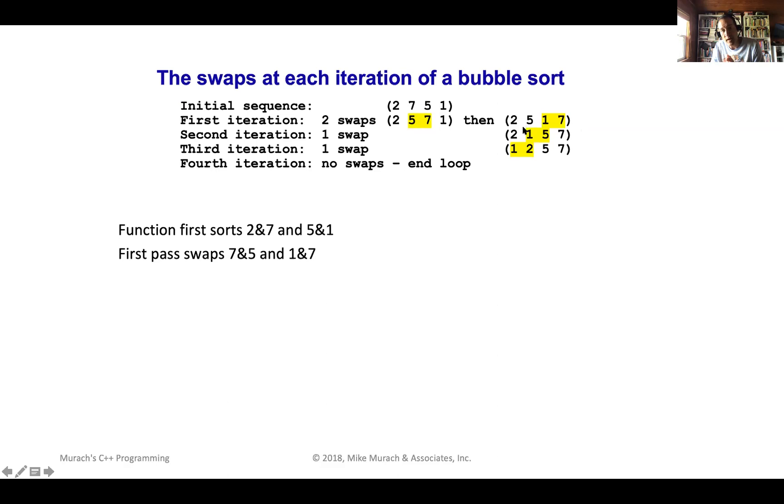Is two smaller than five? Yep. So I don't need to do anything there. Is five smaller than one? Nope. So swap those two. So that's where this swap happens. So now at the end of the second iteration, we've got two, one, five, and seven. And again, we're going to start back over at the beginning.